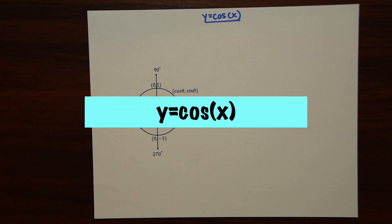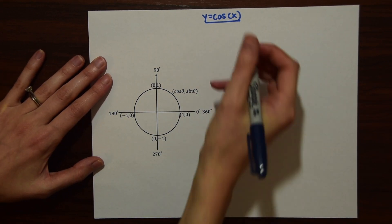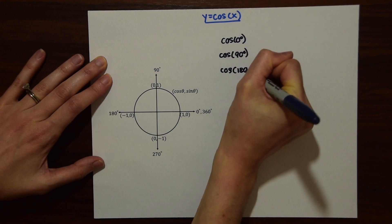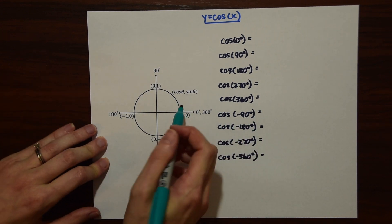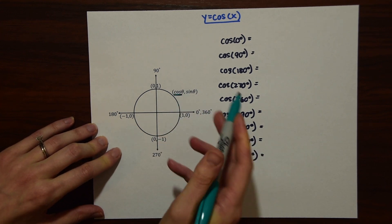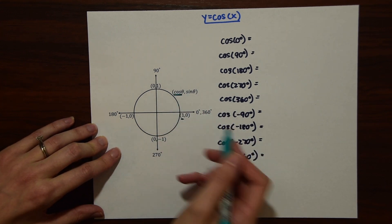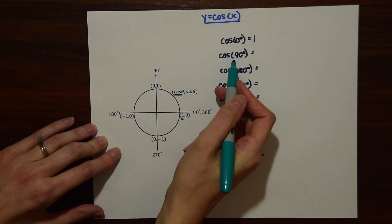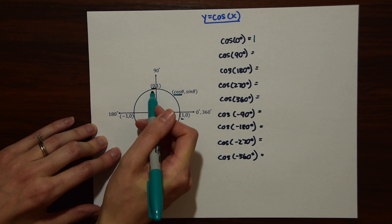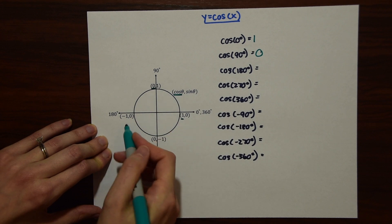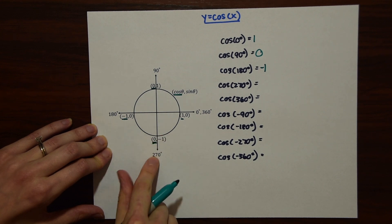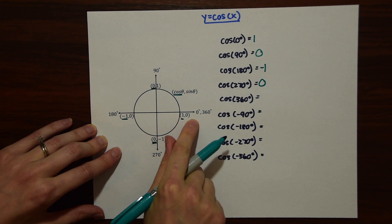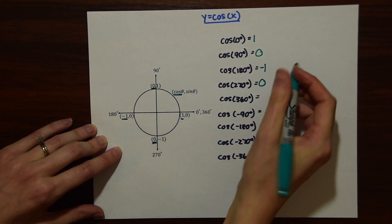Now let's start graphing y equals cosine of x in a very similar way. We're going to find all those degree values, starting with cosine of 0. Before we were looking at y values for sine, but this time we're going to look at x values from the unit circle. Cosine of 0 — x value is 1. Cosine of 90 — x value is 0. Cosine of 180 is minus 1. Cosine of 270 is 0. Back at 360 — that's also 1.